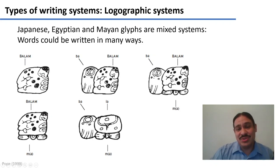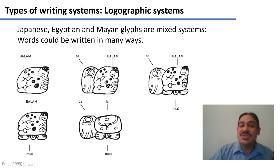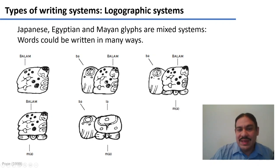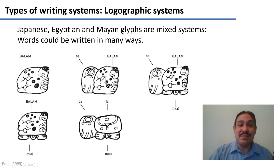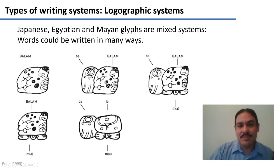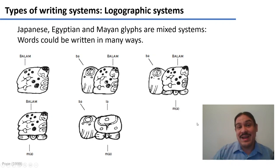But there are other alternatives in between. For example, you could have the glyph for the syllable 'ba,' then the drawing of the jaguar, and then the syllable 'm.' This is not pronounced 'ba-balam' — it is pronounced 'balam.' What these glyphs are doing is providing the scribe with a reminder that the word begins with 'ba' and ends with 'm.' So all of these are valid ways to write a word in Mayan hieroglyphs.